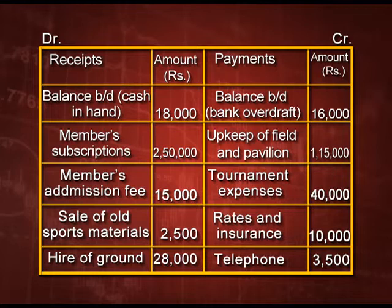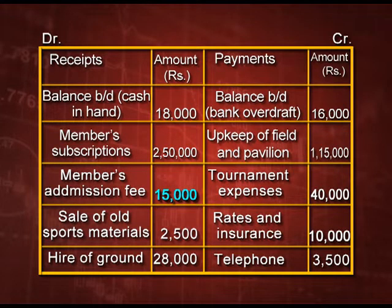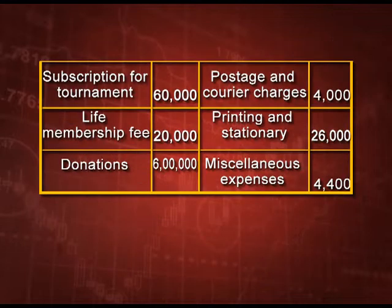You can see on the receipt side: balance brought down, that is opening cash rupees 1800; member subscription rupees 2500; member admission fees rupees 15000; sale of old sports material rupees 2500; hire of ground rupees 28000; subscription for tournament rupees 60000; life membership fee rupees 200000; donation rupees 6 lakh.